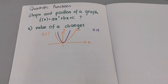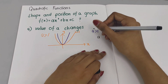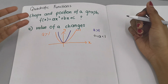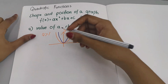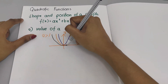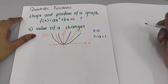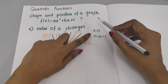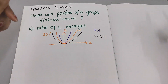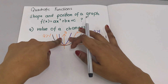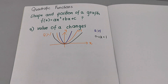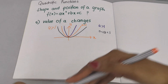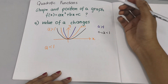Now what happens if A is between 0 and 1, so that means maybe 0.5 or 0.8? What happens is your graph shape becomes wider. So as you can see the difference — if the value of A is becoming bigger, your graph is becoming more narrow, the shape. The same applies for when A is less than 1.